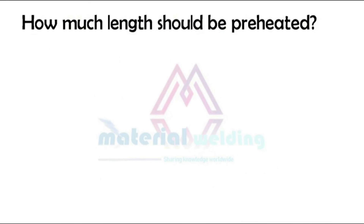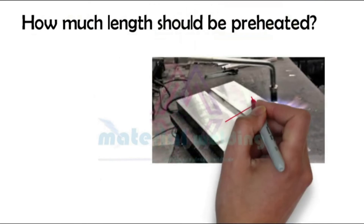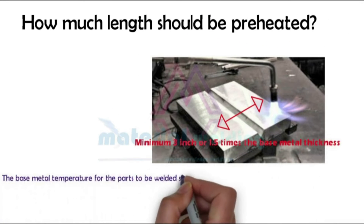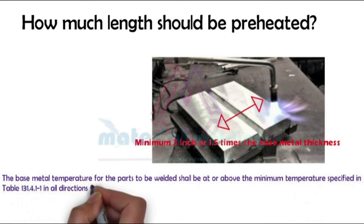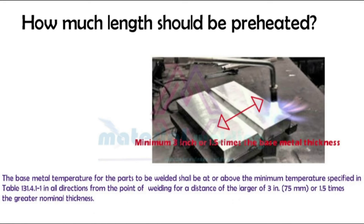The question is, how much length should be preheated? As per ASME B31.1, the base metal temperature before welding shall be at or above the minimum preheat temperature specified in table 131.4.1-1, in all directions from the point of welding, for a distance of 3 inches or 1.5 times the base metal thickness.